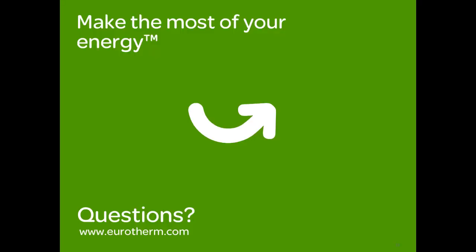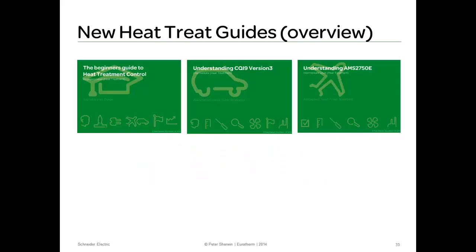I will just break for a few questions, if there are any, before I move to a quick update on some heat treat resources. For the purposes of this recorded webinar, I will move straight on. So, three new guides are nearly complete. They are just currently in review. One is a beginner's guide to heat treat control. And this is useful for a new sales engineer or someone with no background to heat treat and just wants the basics. And then there are two intermediate guides. One is understanding CQI 9 version 3. And the other one understanding AMS 2750E.